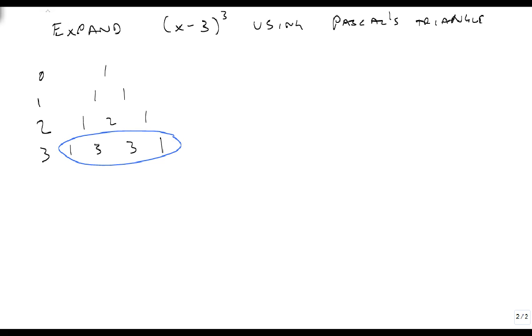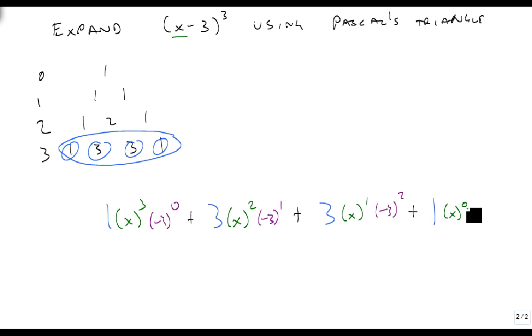So now we take the coefficients in the order they're listed. So we're going to get a 1, a 3, a 3, and a 1. And then we're going to take the first one and do it to the third power and the second one to the zeroth power, plus the first one to one less, plus the second one to one, plus x to one less than it was before times the minus 3 to the second.